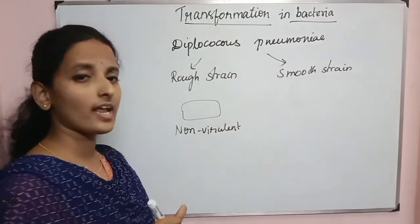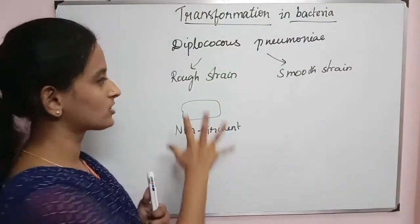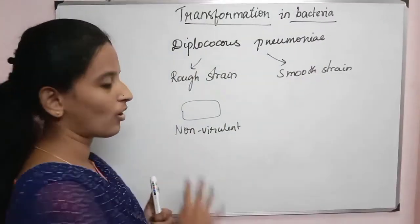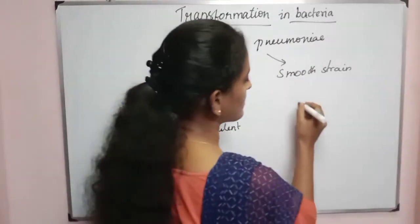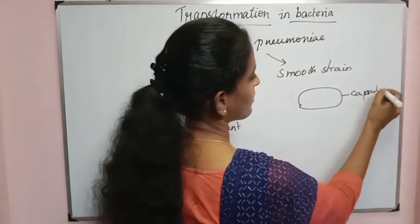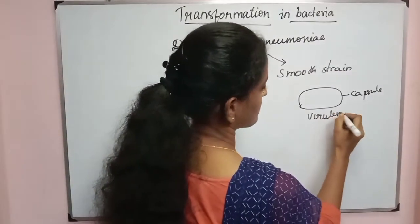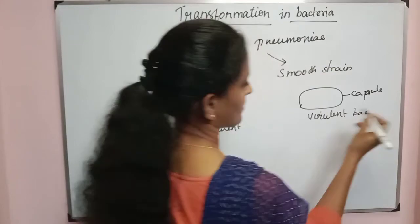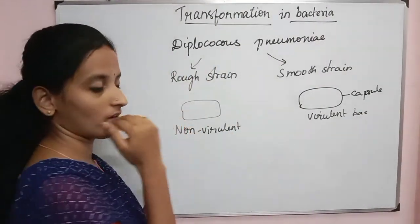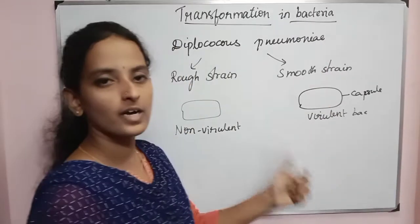Rough bacteria has no capsule layer, and it is non-virulent — it does not cause disease. Smooth bacteria contains a capsule layer and it is virulent bacteria. So these are the two strains: rough strain is non-virulent and smooth strain is virulent bacteria.